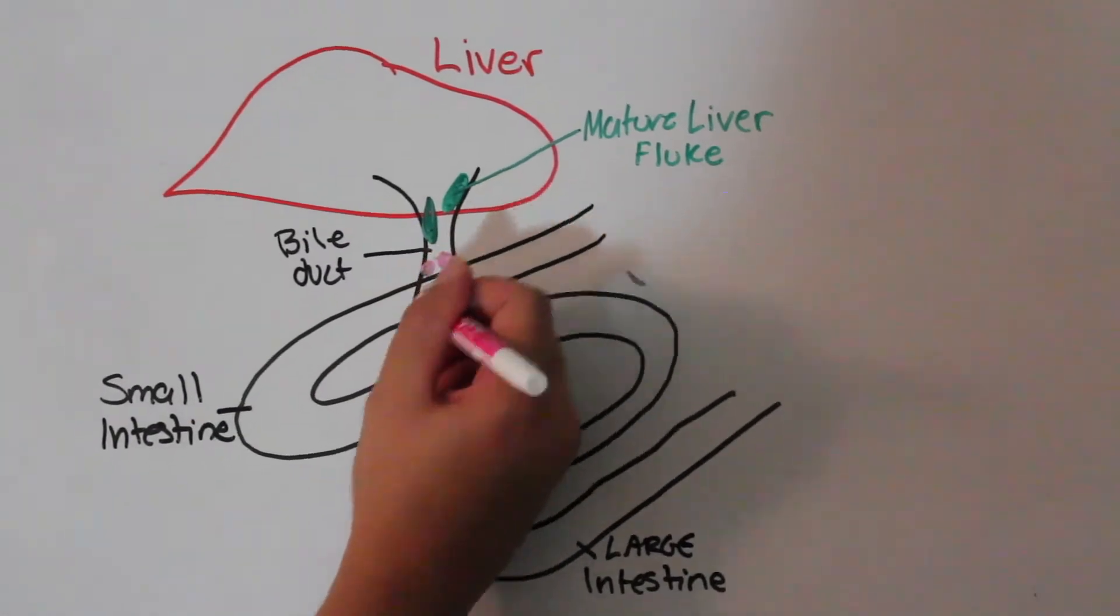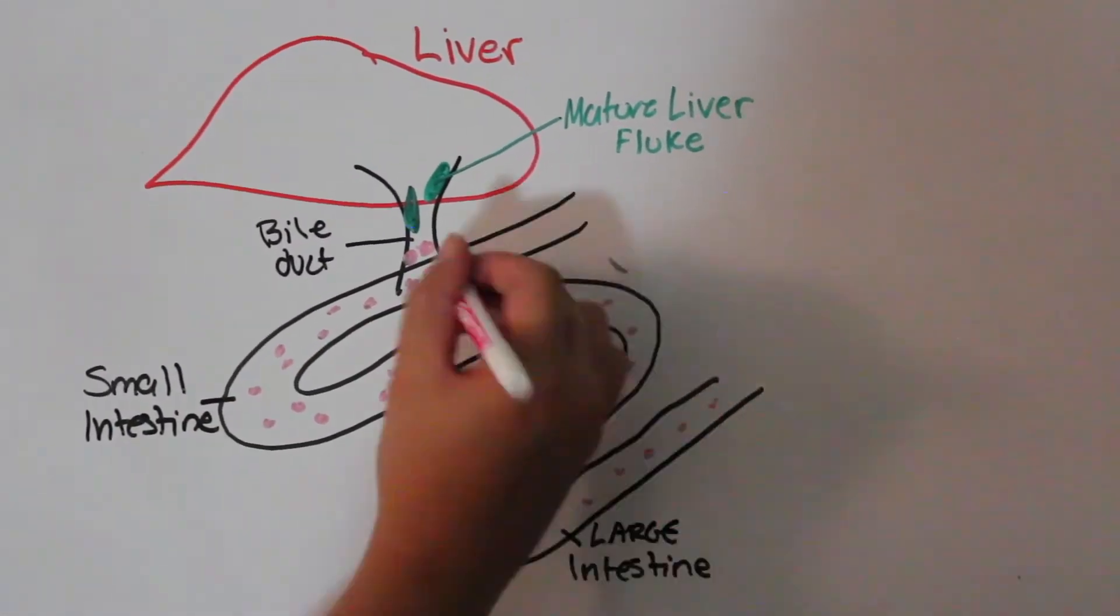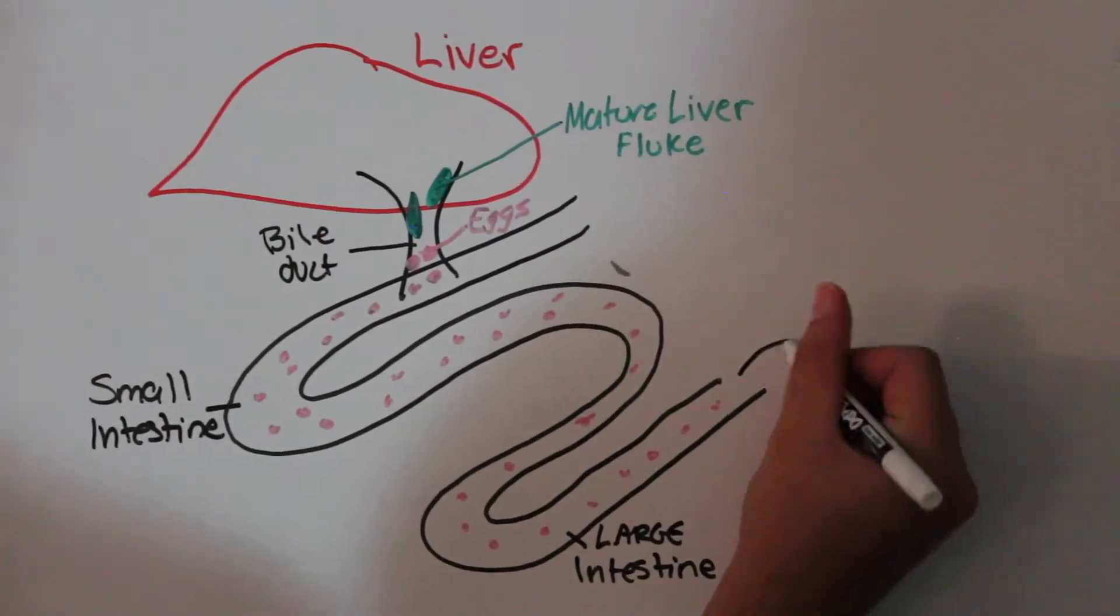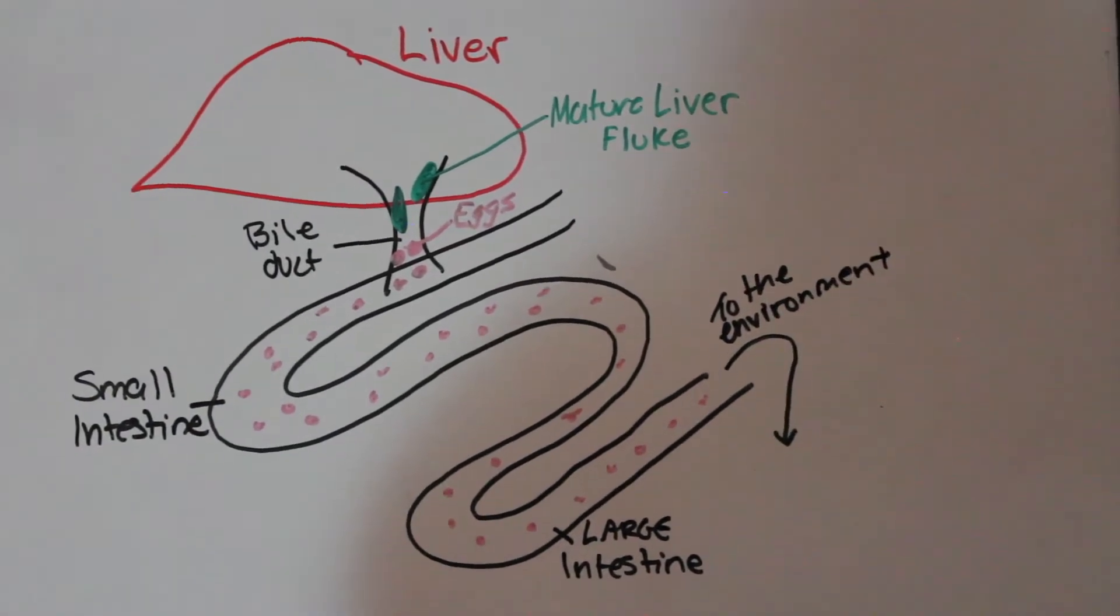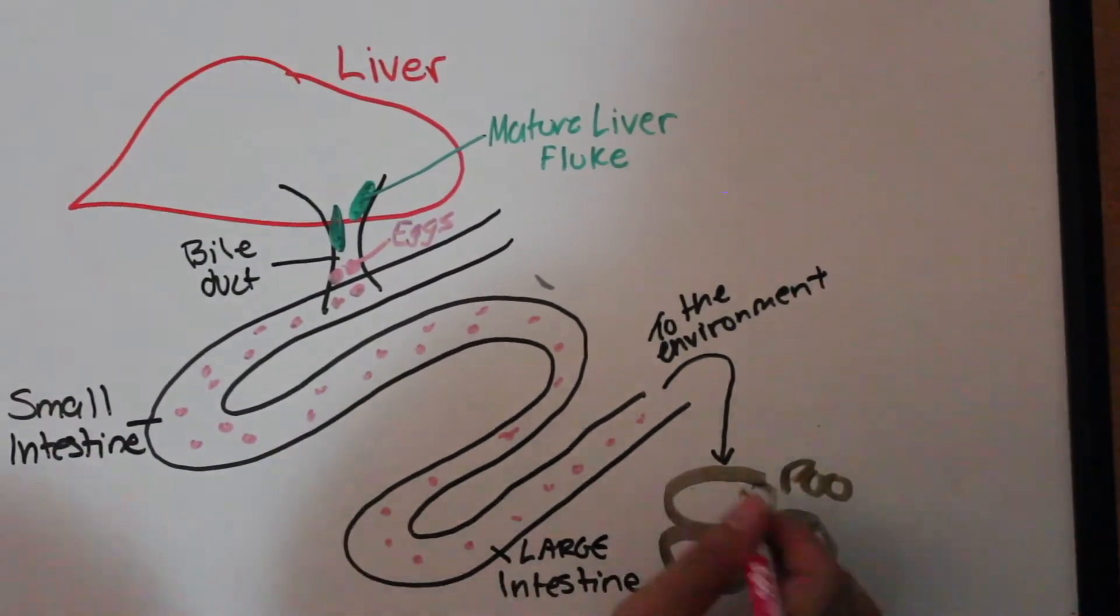Mature liver flukes inhabit the bile ducts of the liver. It is here where the flukes lay their eggs. The eggs then enter the bile and are eliminated into the environment via the feces.